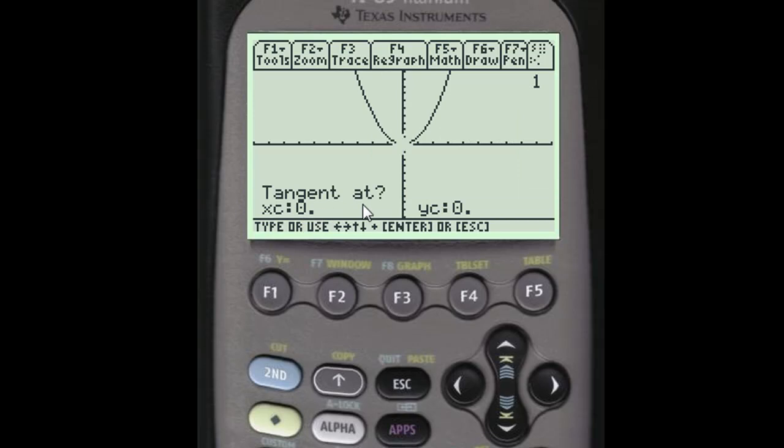It will say 'tangent at'. This is where you enter the x-value for the tangent line you're looking for. In our example, we're looking for a tangent line at x = 1, so I'll type 1 and press enter.